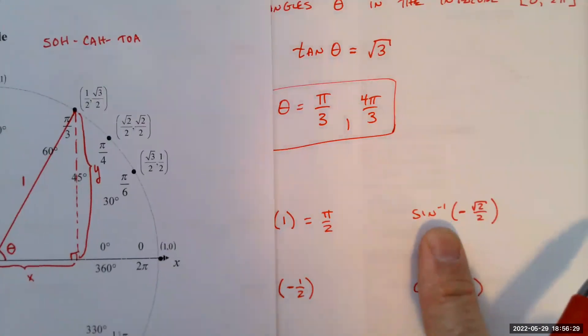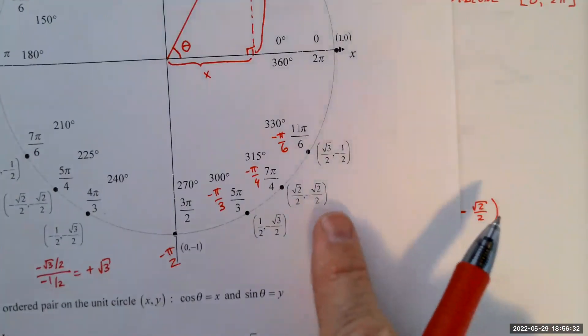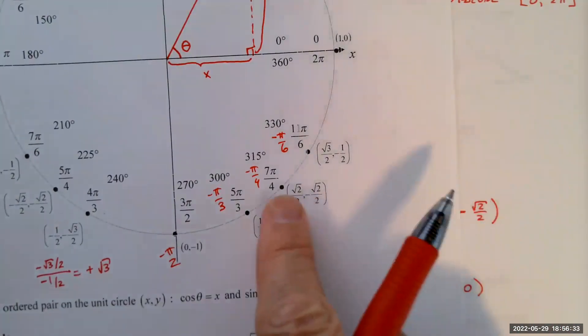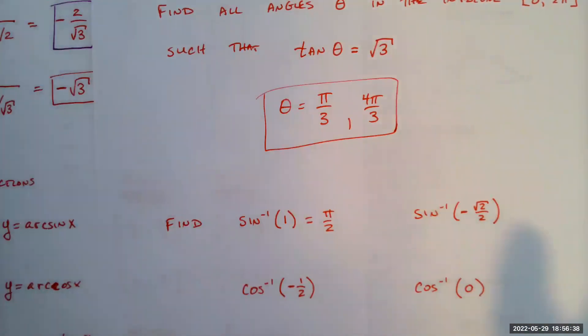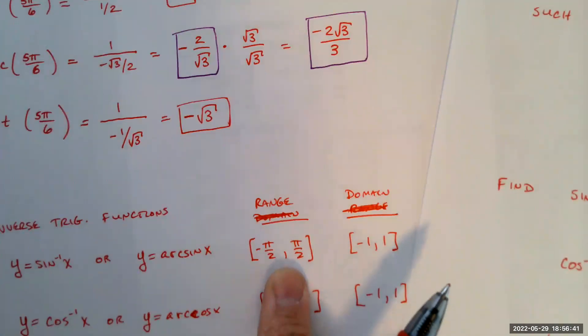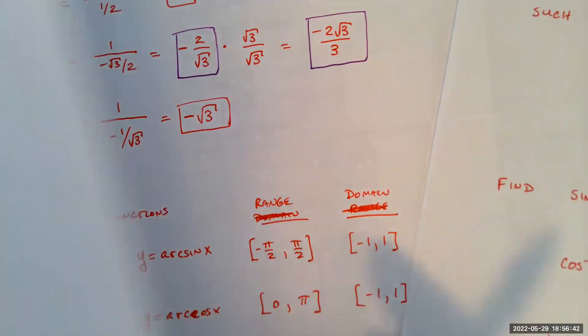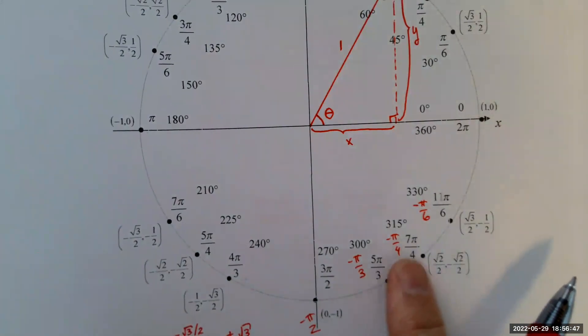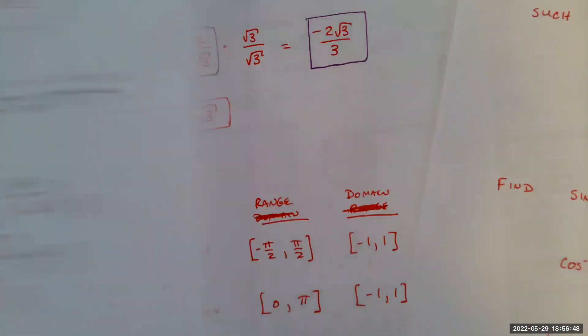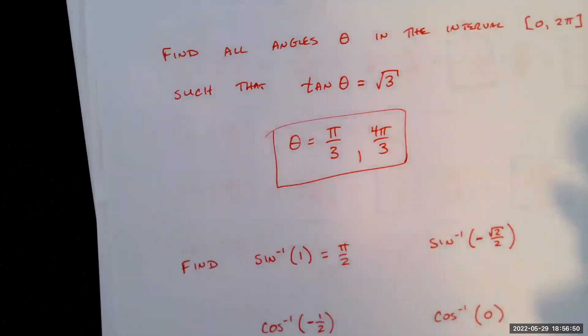The inverse sine of negative √2/2 is not 7π/4 or 5π/4, because those values are not in the required range. The actual answer is negative π/4. That's the tricky thing about the inverse sine function.